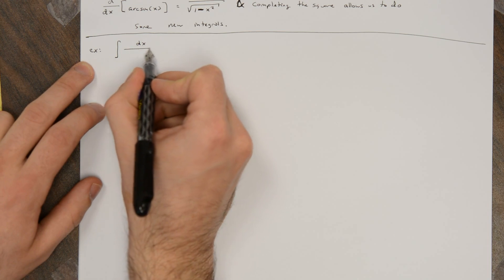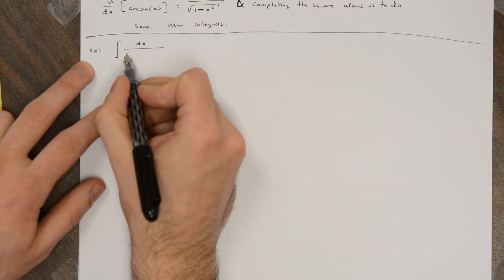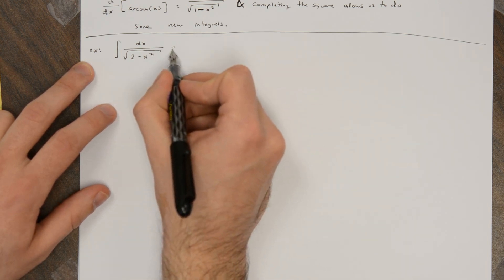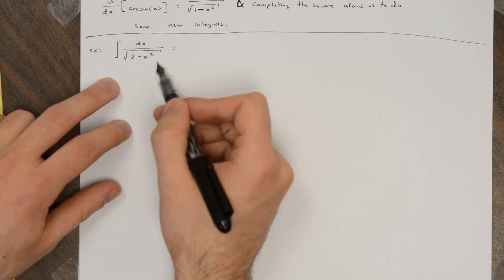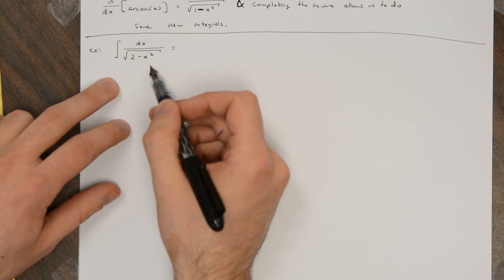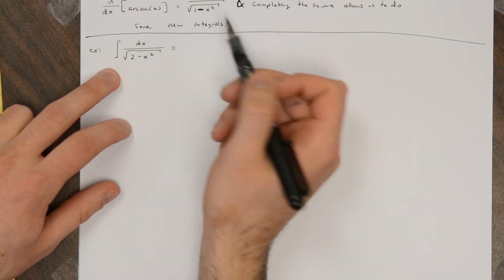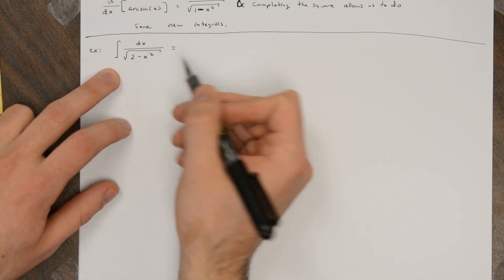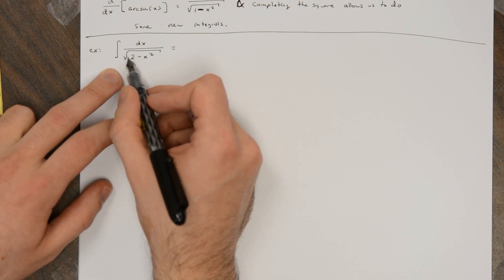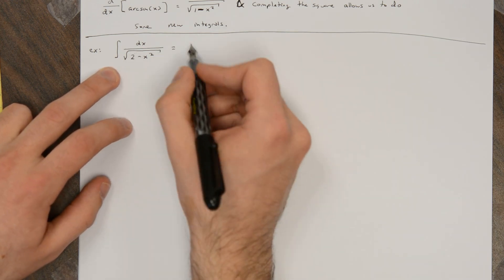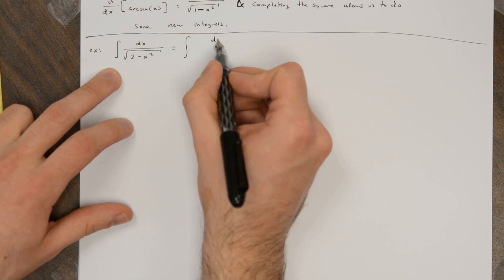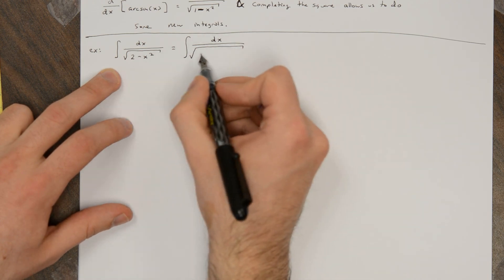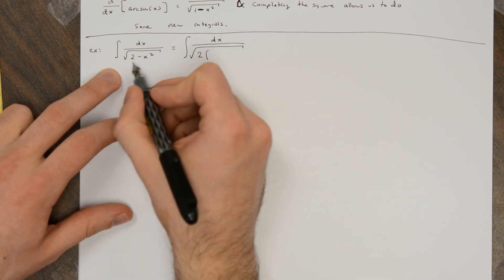The first one is the integral of 1 over the square root of 2 minus x squared. The idea is to rewrite this so it looks like a derivative of arcsine. I already have a constant minus a square, so I don't need to complete the square here, but I do need to get a 1 instead of a 2. So I should factor a 2 out of the expression inside the square root.